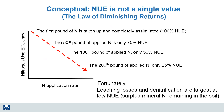As we dig deeper into these calculations, we learn that nitrogen use efficiency really isn't a single number. We're all familiar with the concept of diminishing returns. In this imaginary scenario, the first pound of applied nitrogen gets completely taken up by the crop. For the 50th pound, maybe only 75 percent is taken up. At the 100th pound, perhaps only 50 percent is recovered. And at 200 pounds of nitrogen, only a quarter of that 200th pound gets recovered in the plant. So reporting a single value for overall nitrogen use efficiency can be a bit misleading.